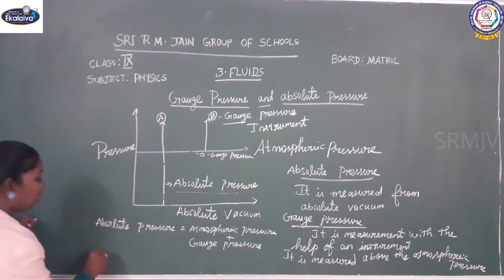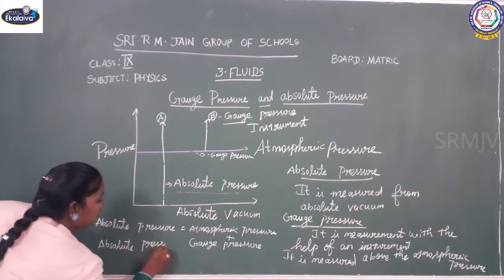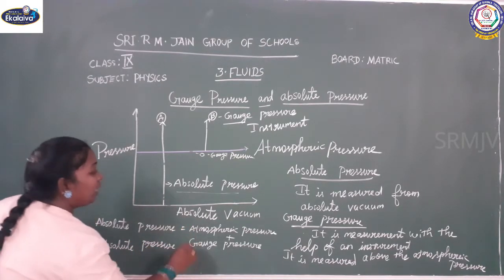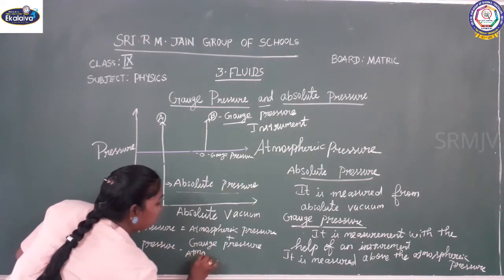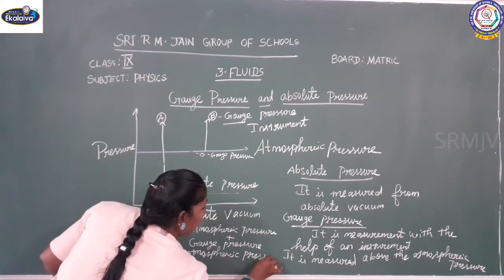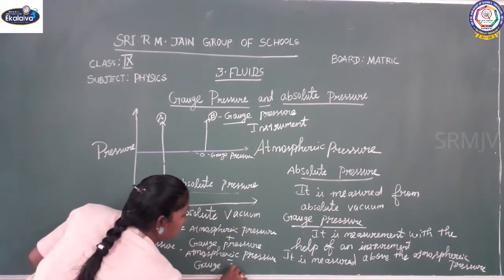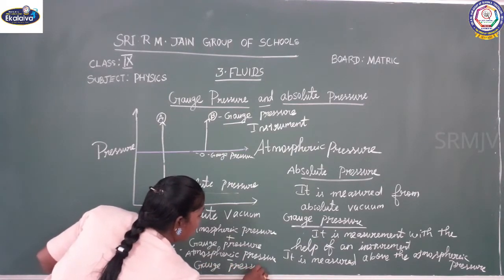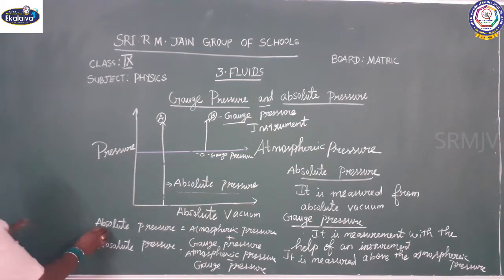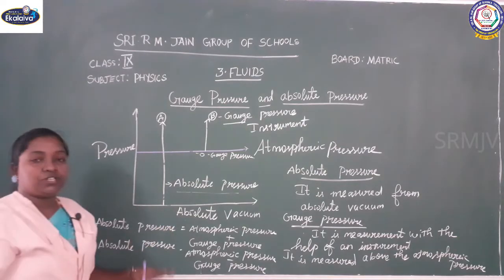When the pressure is lower than atmospheric pressure, absolute pressure equals atmospheric pressure minus gauge pressure. So absolute pressure will act depending on whether the pressure is higher or lower than the atmospheric pressure.